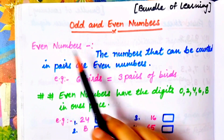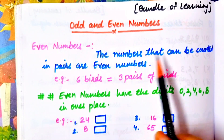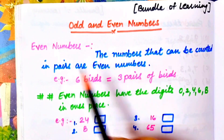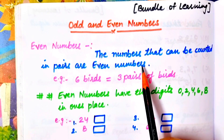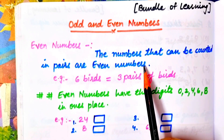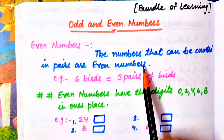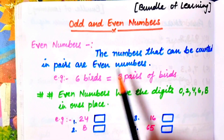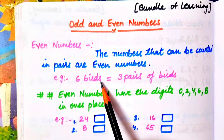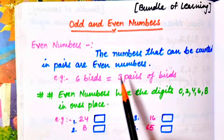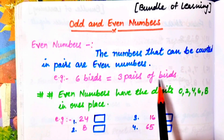First of all, we will look at even numbers. The numbers that can be counted in pairs are even numbers. For example, we have six birds — six birds means three pairs of birds.